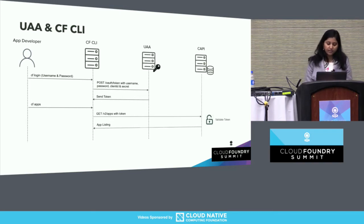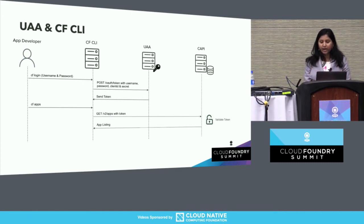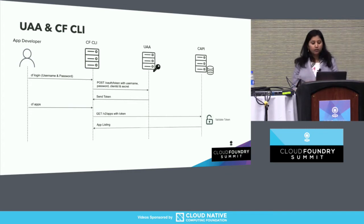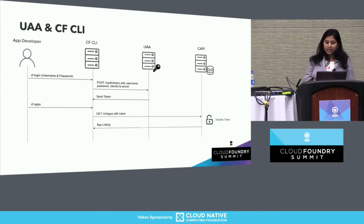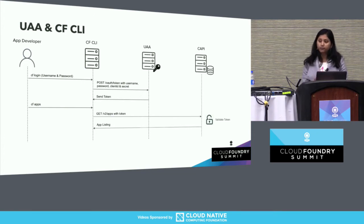This is a basic flow — everyone here is familiar with the CF CLI. As an app developer, when you access the CF CLI, the very first thing you do is log in and provide your username and password. That is something the CF CLI as a client passes to UAA so that UAA can authenticate the user. It also validates the identity of the CF CLI itself so that it knows the request has been made by a trusted application.